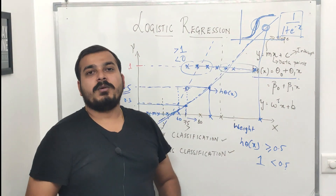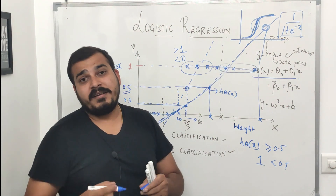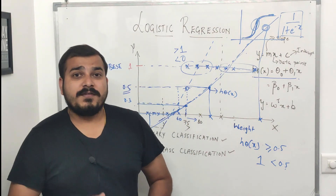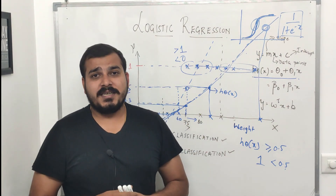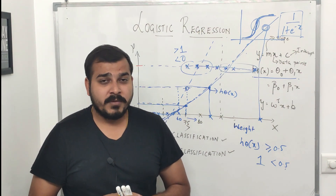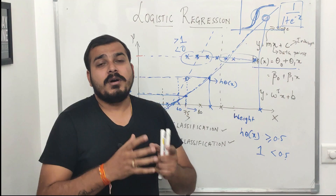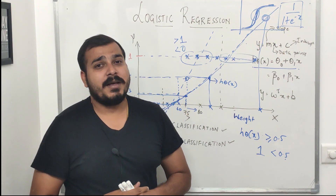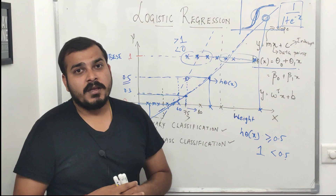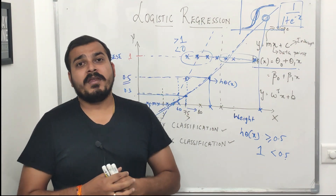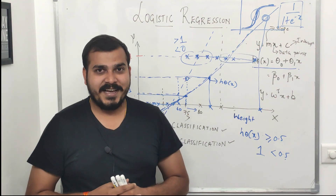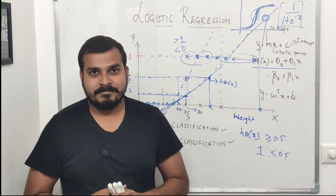We need to understand how this sigmoid curve is created and the math behind it — that will be covered in the next class. Before ending, if you're looking for career transition advice toward data science, please check out the YouTube channel of Springboard India, where you can see talks by real-world data scientists working at various MNCs. The link is in the description. Please subscribe to the channel — see you in the next video, have a great day!